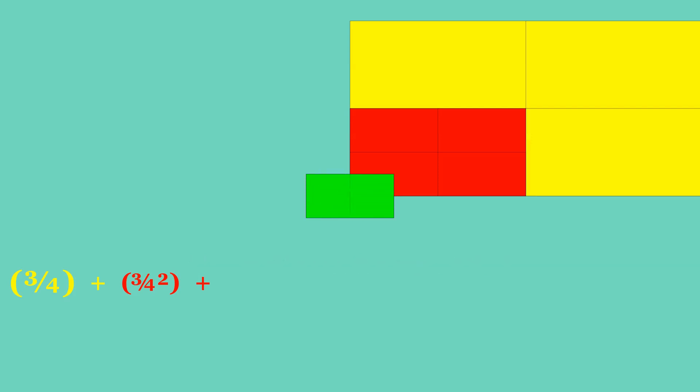Divide the last remaining mini rectangle, the green one, into four equal mini mini rectangles.